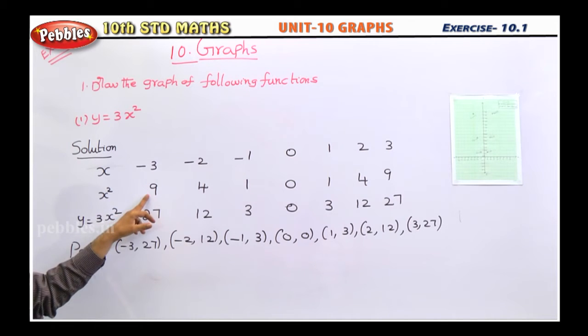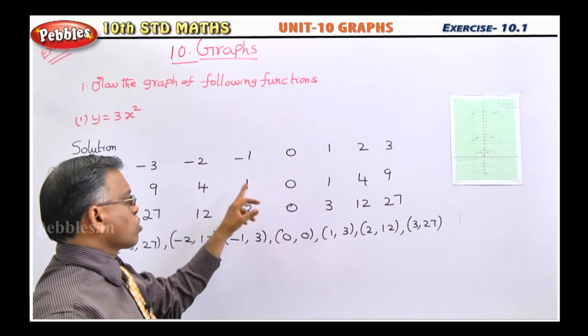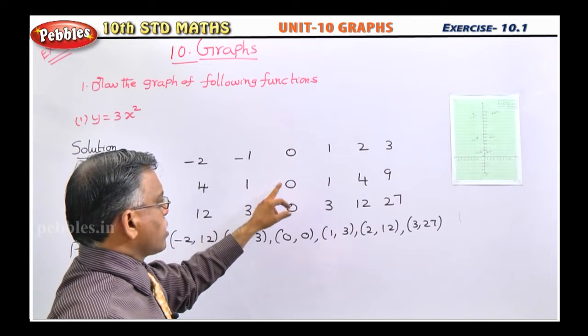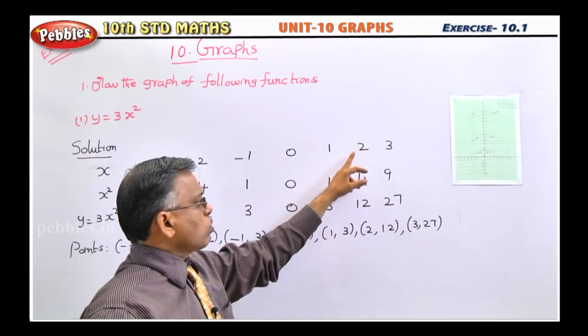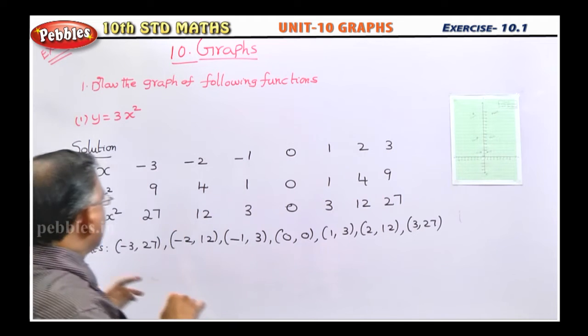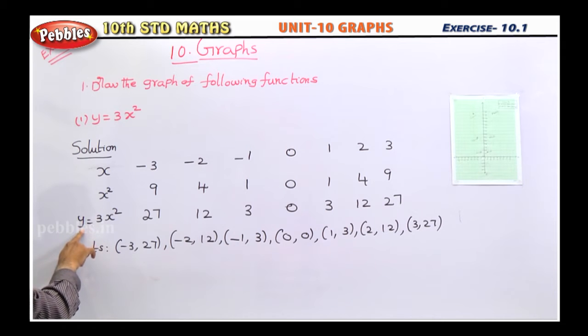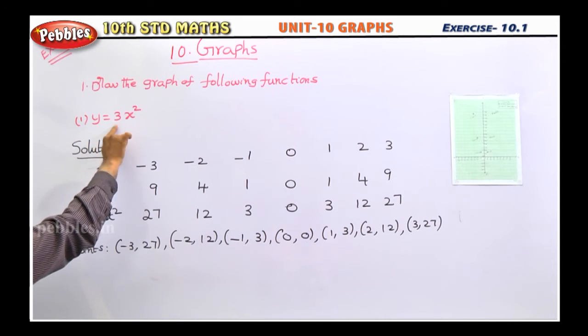Minus 3 the whole square is 9, minus 2 the whole square is 4, minus 1 the whole square is 1, 0 the whole square is 0, 1 the square is 1, 2 the square is 4, 3 the square is 9. Then you should plot these values by using this y variable also. This is only x variable. What is y they given? 3x square.